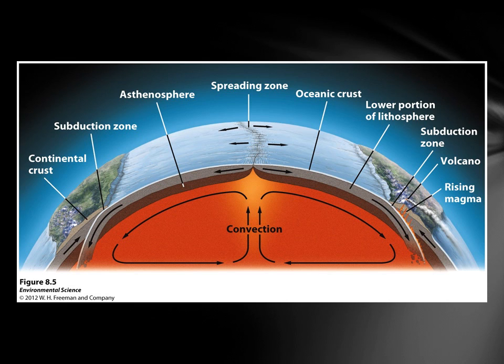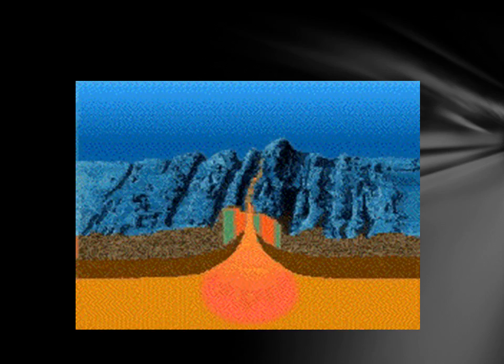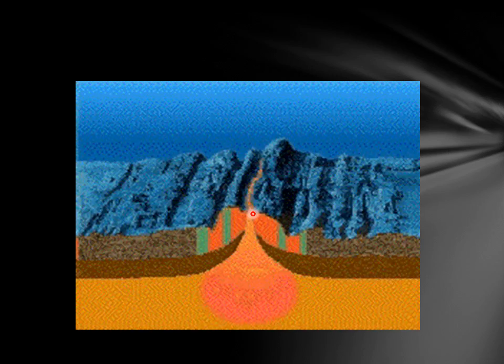Now that we've talked about convection currents, this brings us to ocean floor spreading. You may have heard of the mid-Atlantic ridge — a mid-ocean ridge is essentially an underwater mountain chain, and the mid-Atlantic ridge is in the middle of the Atlantic Ocean. Looking closer, lava erupts up from the ocean floor into the middle of the mid-ocean ridge at what we call a rift valley. As magma cools and hardens, it forms new ocean floor that moves outward in both directions from the mid-ocean ridge.